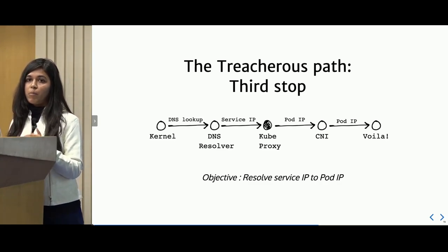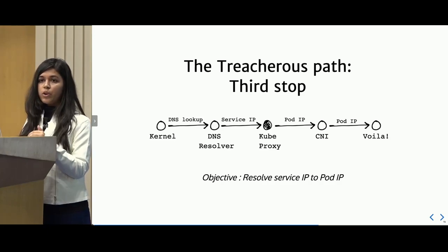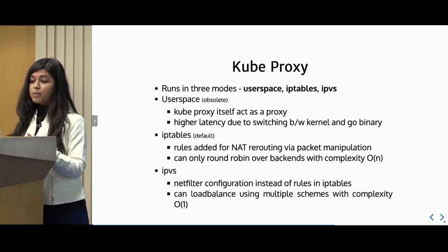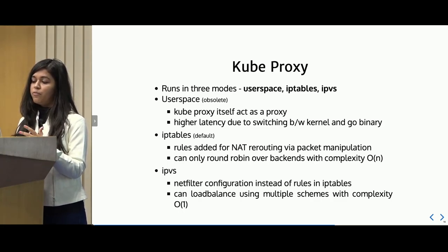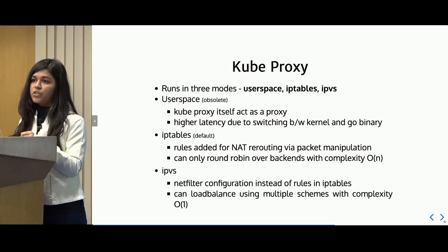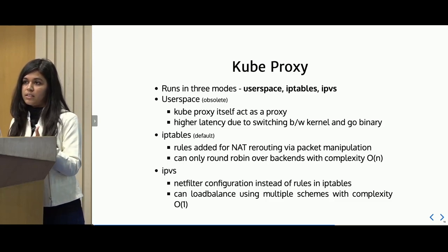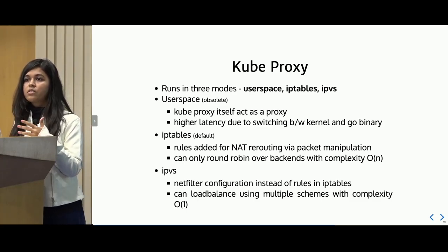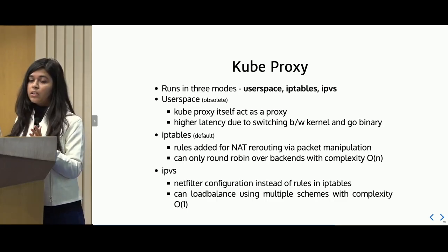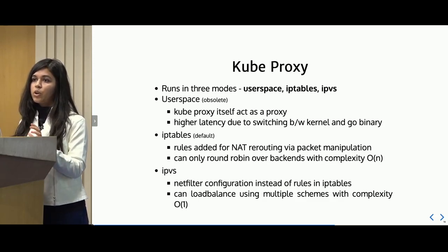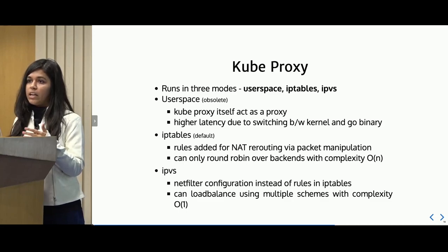Now that we have our service IP, we want to reach a pod IP — since a service load balances over multiple pods, we need to figure out our pod IP. This is the job of kube-proxy. kube-proxy can run in three modes: user space, iptables, and IPVS. User space is an obsolete mode where kube-proxy itself acts as a proxy — the Go binary forwards all requests to your services. It configures iptables to forward all connections to a port where kube-proxy is listening, then kube-proxy terminates the connection and establishes a new connection to your service. In this scenario, there is a lot of switching between the kernel and the Go binary introducing latency, and kube-proxy becomes a blocker that you must keep scaled and always running.